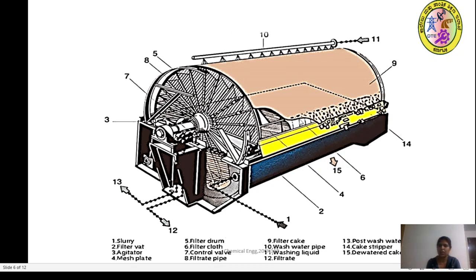Looking at the visual representation of the rotary drum, you can see the number of compartments spaced in the annular space between the two drums. Component one is the slurry port, two is the filter cloth for filtrate removal, three is the agitator which helps in uniform maintenance of concentration, four is the mesh plate filter drum, five is the filter drum, and six is the filter cloth.